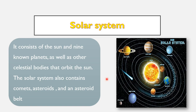Our solar system has the Sun in the middle with nine planets orbiting around it. The solar system also contains celestial bodies like comets, asteroids, and the asteroid belt. The nine planets go around the Sun in a virtual line called the orbit. Our Earth is the third planet.